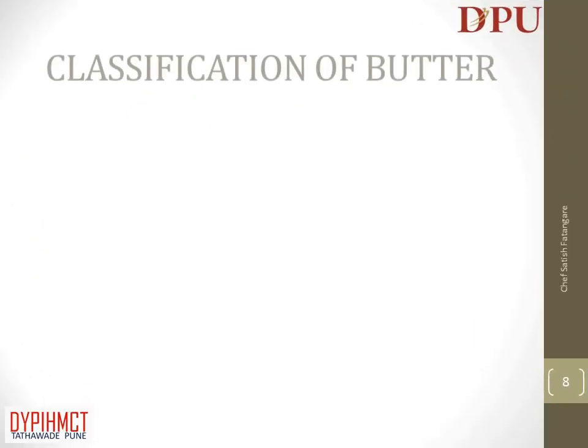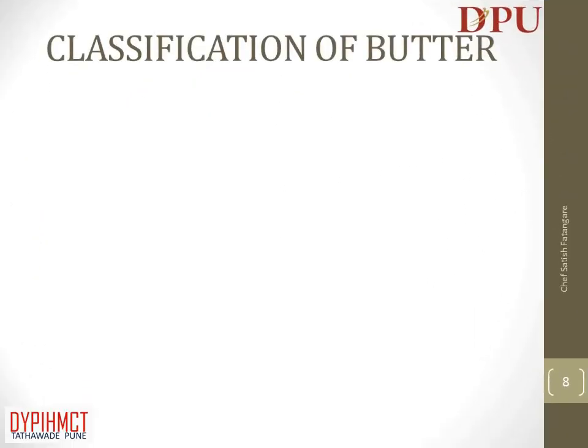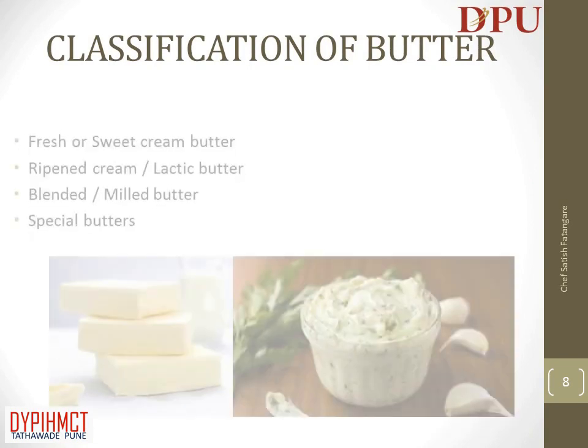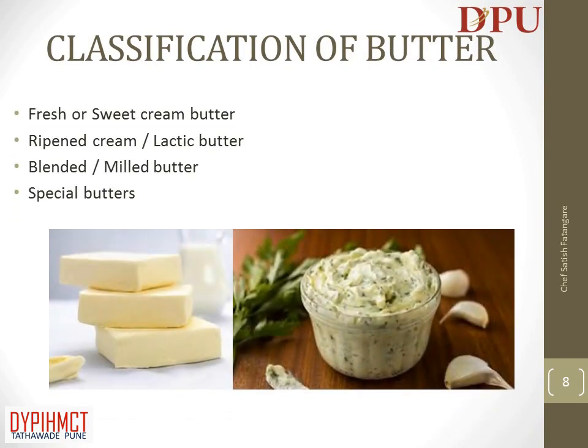In this slide we will discuss about the classification of butter. Butter is classified as: fresh or sweet cream butter, ripened cream or lactic butter, blended or milled butter, and special butters.